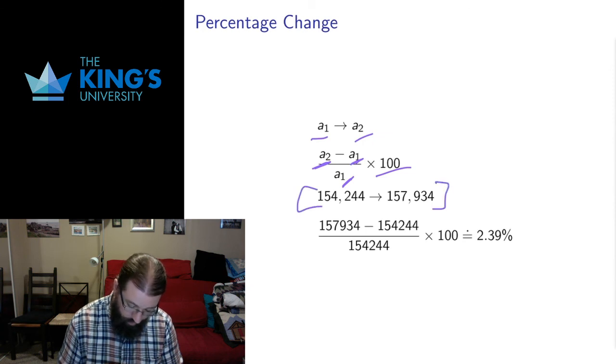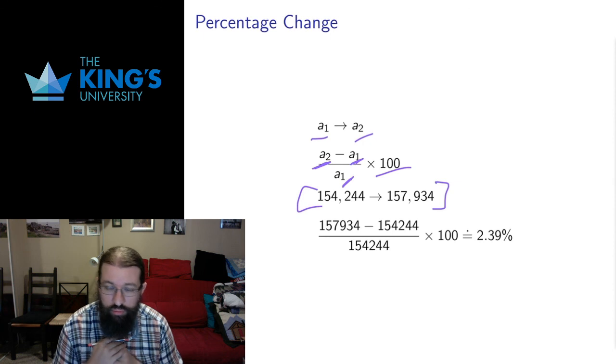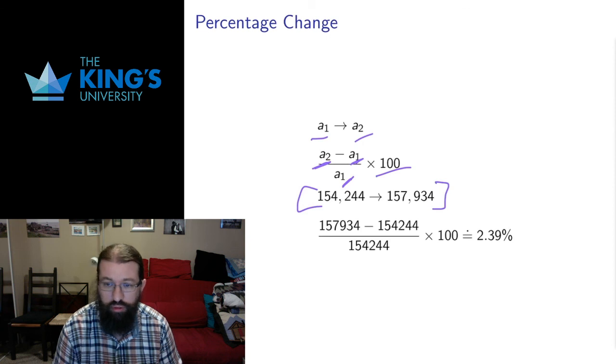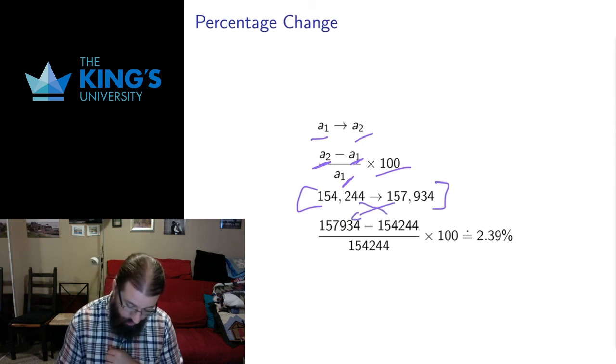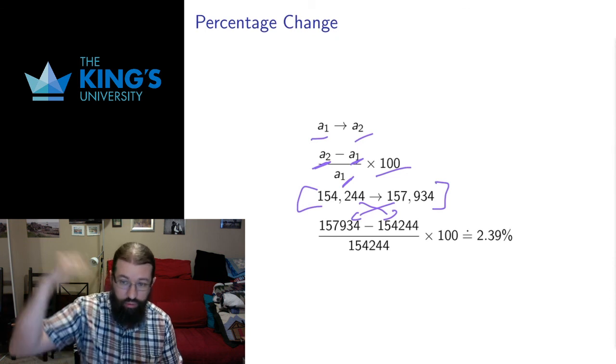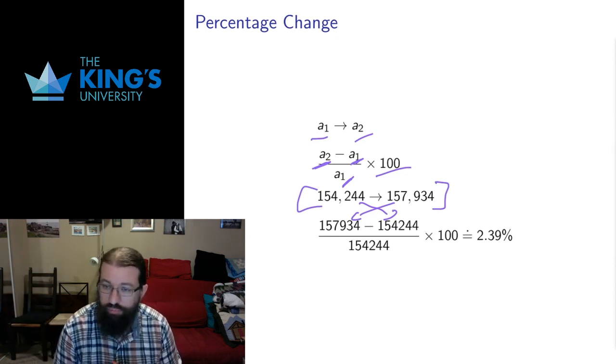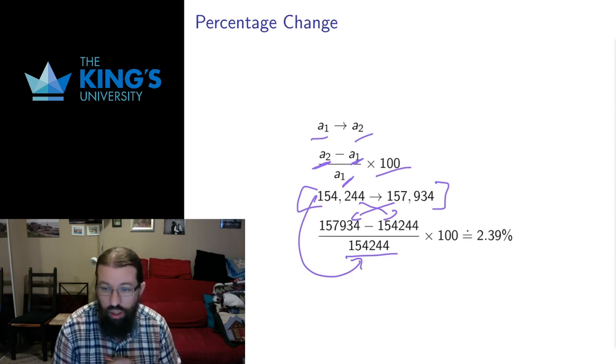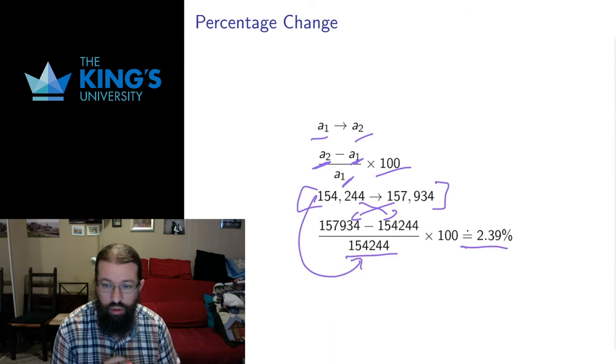Let's be explicit about that. Let's say we have a population that has 154,244 and it grows in a time period, a year say, to 157,934. We want to say in that year, what is the percentage change? How much has the population grown? So we take the ending value, subtract the starting value. That'll be positive because this has grown. It's grown from 154,000 to 157,000. That's growing up. So since this has increased, we expect that to be positive. If it had decreased, we expect it to be negative. We divide by the starting value. So it's the starting value here. And we multiply by 100. And I asked a computer for an approximate value for this, and it gave me 2.39. So the percentage growth from 154,244 to 157,934 is 2.39 percentage points of growth. Thank you.